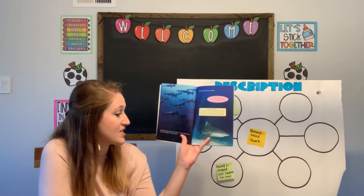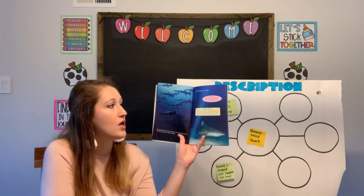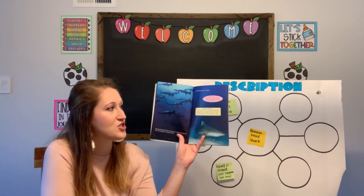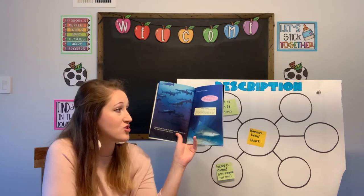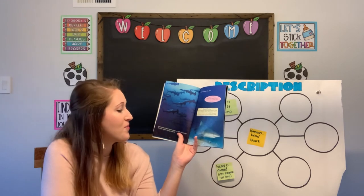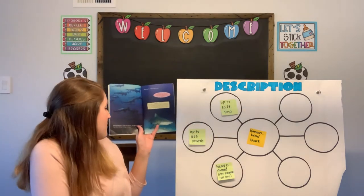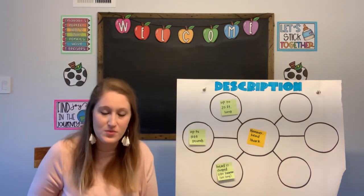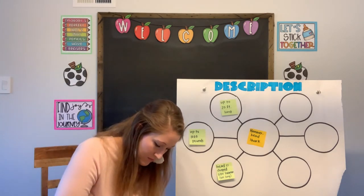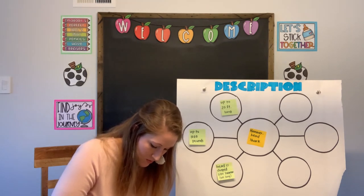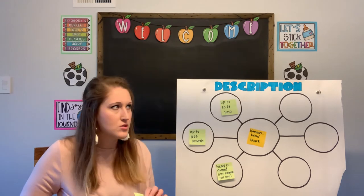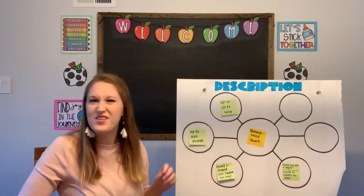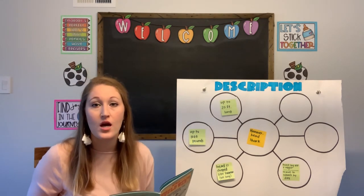Hammerheads hunt by themselves at night. During the day, they migrate in huge schools. Bull sharks prefer to be alone — though despite their solitary nature, bull sharks sometimes hunt in twos. The bull shark has many names: Zambezi shark, estuary shark, Java shark, and more. A school, by the way, is another name for a group of fish — not the kind where we go to learn.